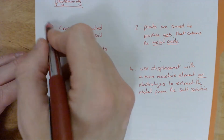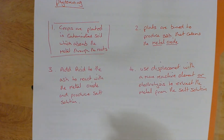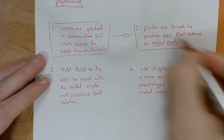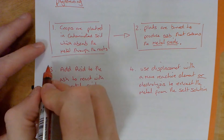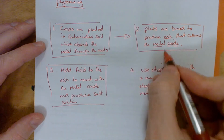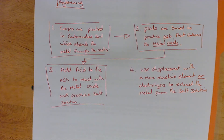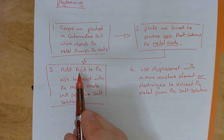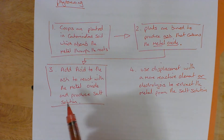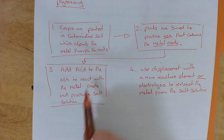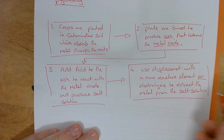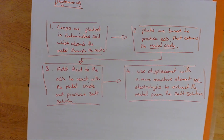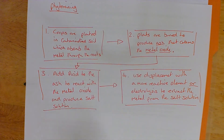Those are your four steps: crops planted in contaminated soil absorb the metal through roots; plants burned to produce ash containing metal oxide; ash reacted with acid in a neutralization reaction to produce a salt solution — for example, copper oxide plus sulfuric acid gives copper sulfate solution; finally, a more reactive metal displaces it or electrolysis extracts the metal from the solution.